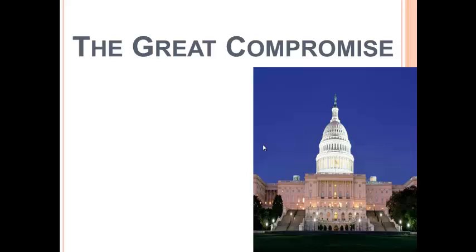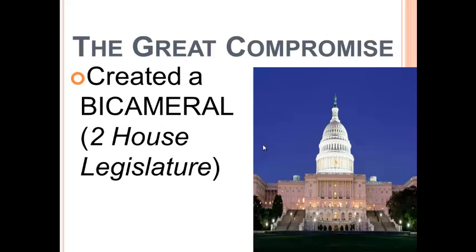How about the idea of compromise? This was referred to as the Great Compromise. If you and I wanted to go to lunch and you wanted to go to Chipotle and I wanted to go to Taco Bell, we're going to have to make a compromise — go somewhere we can both agree. And that's what our founders needed to do. It's referred to as the Great Compromise, where they would create a bicameral — a two-house legislature — which means laws would be created by two houses of government.